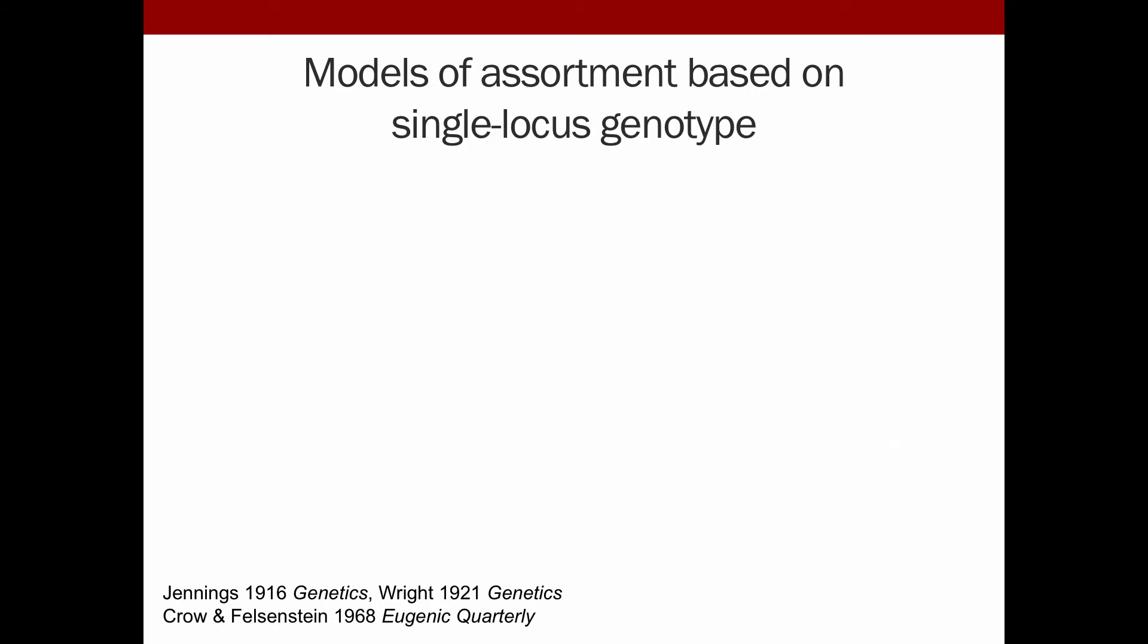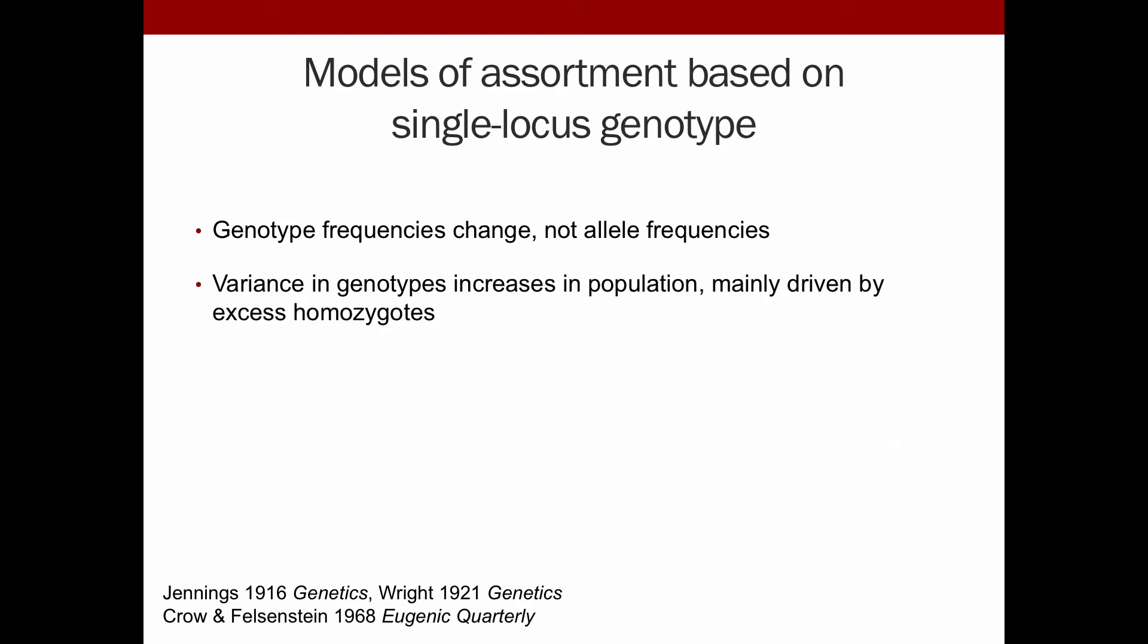This may be familiar to some of you because these results where the mean stays the same but the variance changes in this predictable way is reminiscent of models of assortment based on single locus genotypes, where genotype frequencies change but not the allele frequencies, so the pairing but not the overall mean. This is similar where the variance in genotypes increase in the population driven largely by this excess of homozygotes. Similarly, we're driven by this excess of, say, source one mating with source one and source two with source two, so these zeros and ones in the ancestry distribution.